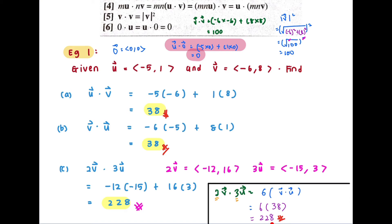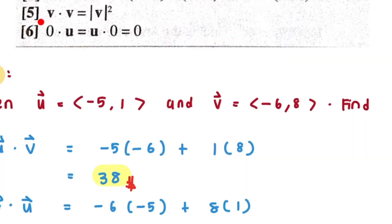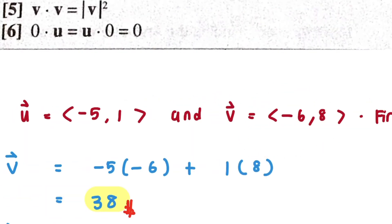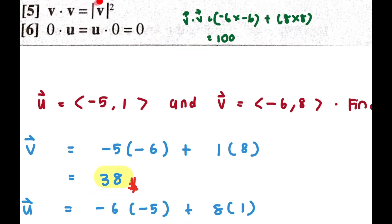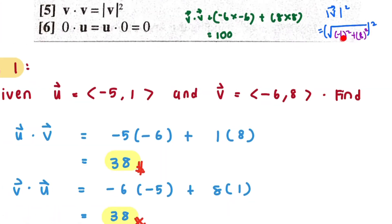Now let's see property number five: v dot v equals the magnitude of v squared. Using vector v, v dot v is negative 6 times negative 6 plus 8 times 8, which equals 100. For the right-hand side, magnitude v squared is the square root of (negative 6 squared plus 8 squared), squared. The square root of 100 squared gives 100. Therefore v dot v equals magnitude v squared, both equal to 100.